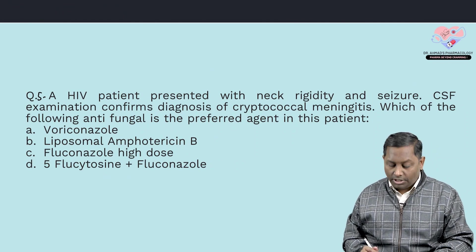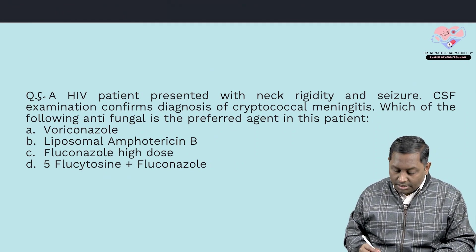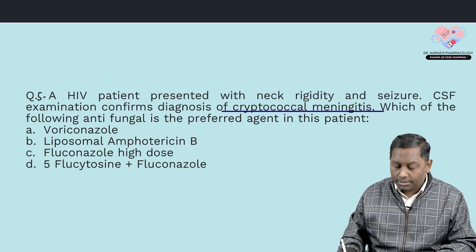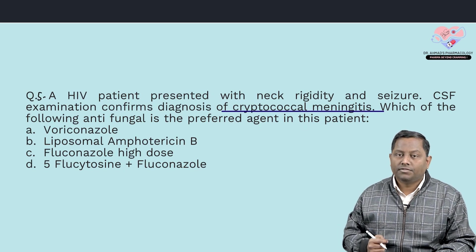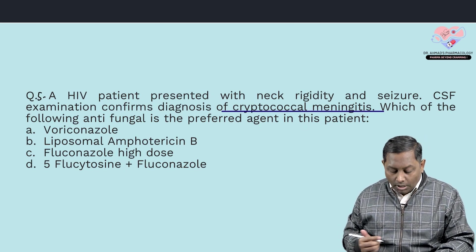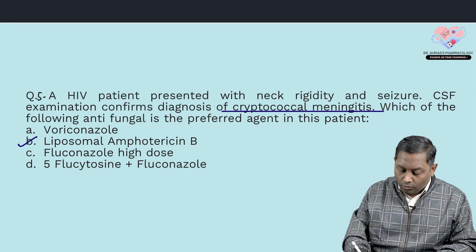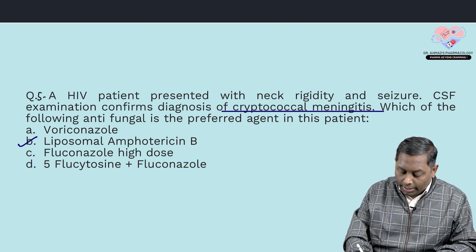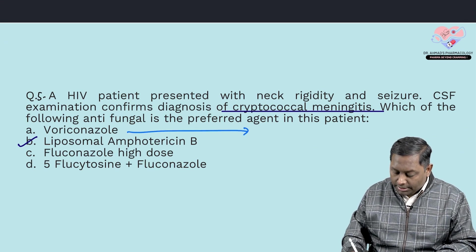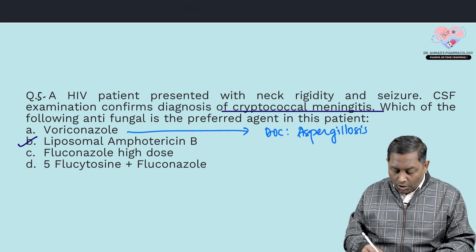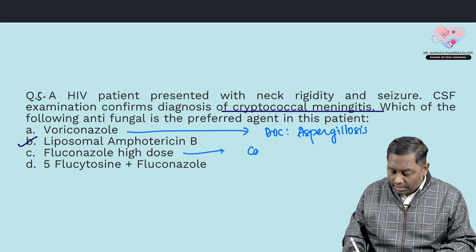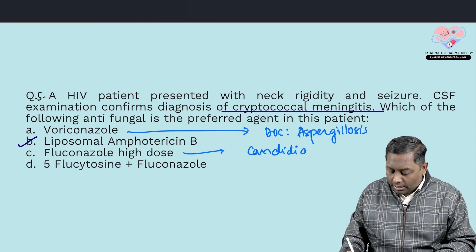The last question: an HIV patient presents with neck rigidity and seizures; CSF examination confirms cryptococcal meningitis. For cryptococcal meningitis or any serious fungal infection, the drug of choice is liposomal amphotericin B. To rule out other options: voriconazole is the drug of choice for aspergillosis — remember 'worry not, I am here' for aspergillosis. Fluconazole is the drug of choice for candidiasis.